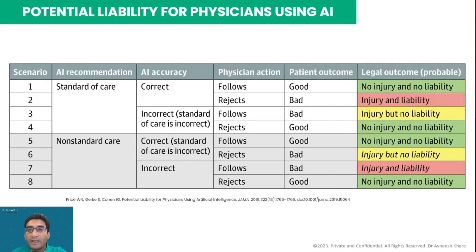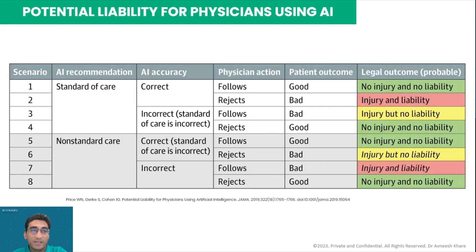There is always a question about liability or litigation: if a physician is using AI, is he or she liable for injury to the patient? There is no correct answer at this point because regulations and models are still being developed. As a guideline, you have to be careful in two red areas: AI will either recommend standard of care or non-standard of care, and then it can be correct or incorrect, and you will either follow or reject it. The most important cases are when you reject the standard of care suggested by AI, or accept non-standard care suggested by AI, and it leads to a bad patient outcome — then you are liable for injury. Once regulations are set and things are clear, it will become easier for clinicians to understand when to use and when not to use AI.